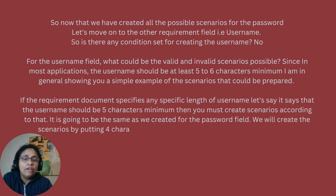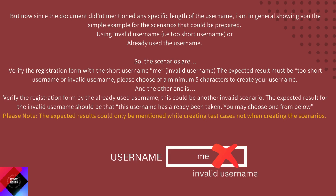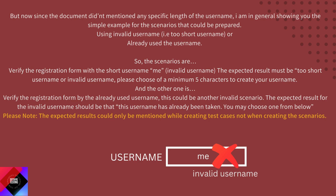We will create scenarios by putting four characters valid and leaving one character invalid or missing. Since the document didn't mention any specific length of the username, I am in general showing simple examples. Using an invalid username — too short or already used. The scenarios are: verify the registration form with a short username, for example 'me' — that is an invalid username, and the expected result should be 'too short username — please choose a minimum of five characters.' The other is: verify the registration form by using an already used username. The expected result should be 'this username has already been taken — you may choose one from below.'